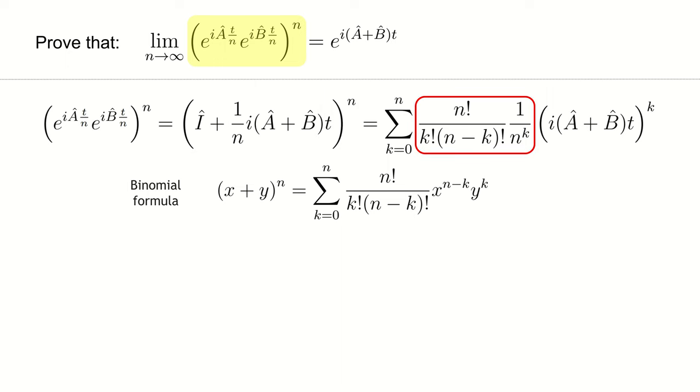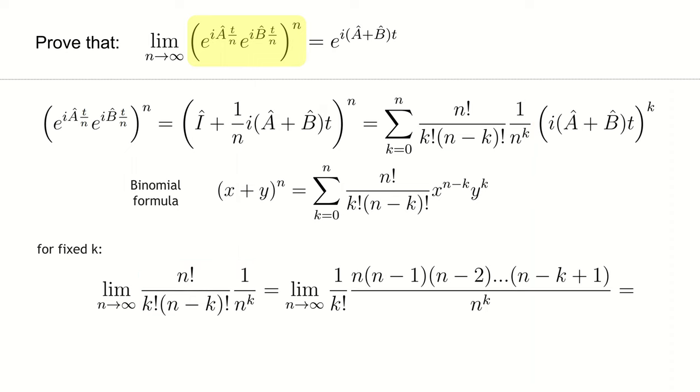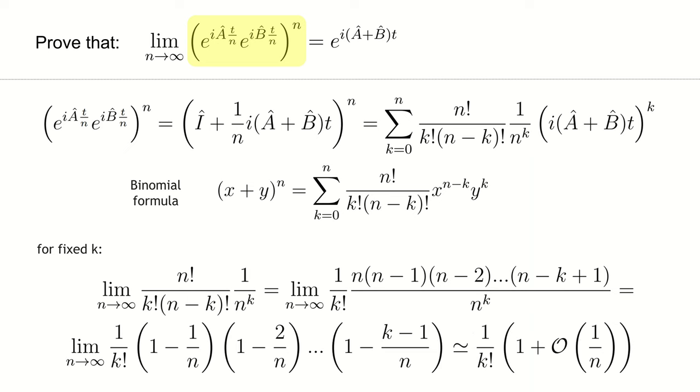Now let us find the asymptotic behavior of the expression in the red box for any fixed k. First, let's get rid of the factorials. And then we divide the numerator by the denominator.